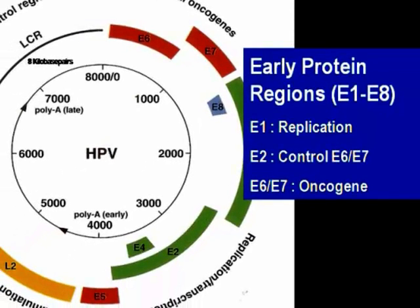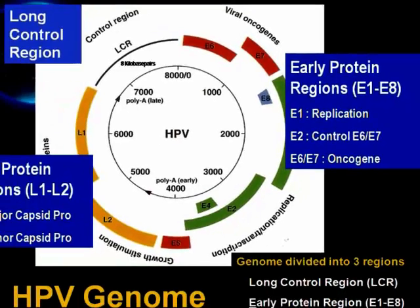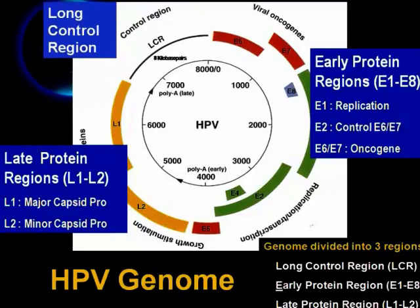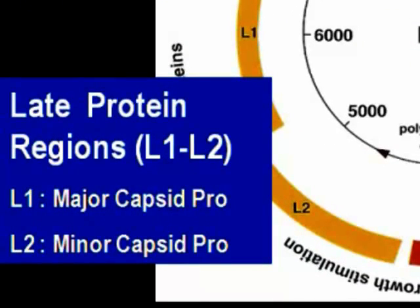For example, the E1 gene encodes E1 protein used for viral replication. E2 gene controls the E6 and E7 genes, while E6 and E7 are oncogenes. E6 and E7 encode the oncoproteins responsible for malignant transformation of infected cells. The second region is the late protein region, containing L1 and L2 genes. L1 encodes VP1 or major capsid protein, while L2 encodes VP2 or minor capsid protein.